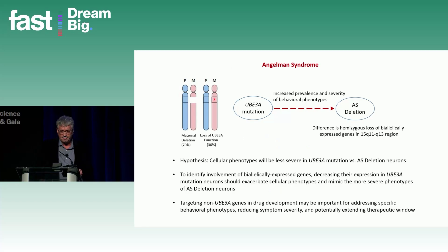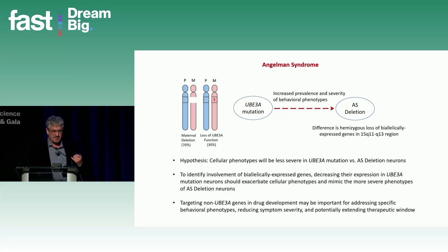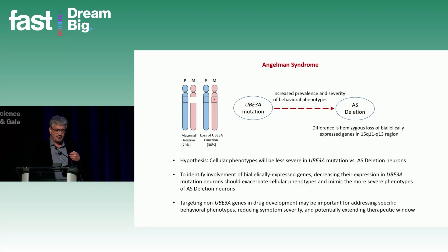We're particularly interested in comparing neurons derived from donors that have just a UBE3A mutation versus donors that have the larger AS deletion. We believe that paralleling the difference in behavioral phenotype, cellular and molecular phenotypes in UBE3A mutation neurons will be less severe than in deletion neurons — a result of contribution from non-UBE3A genes. To identify specific genes, we'll decrease expression of selective genes in the UBE3A mutation neurons and see if that contributes to the stronger phenotype seen in deletion neurons.